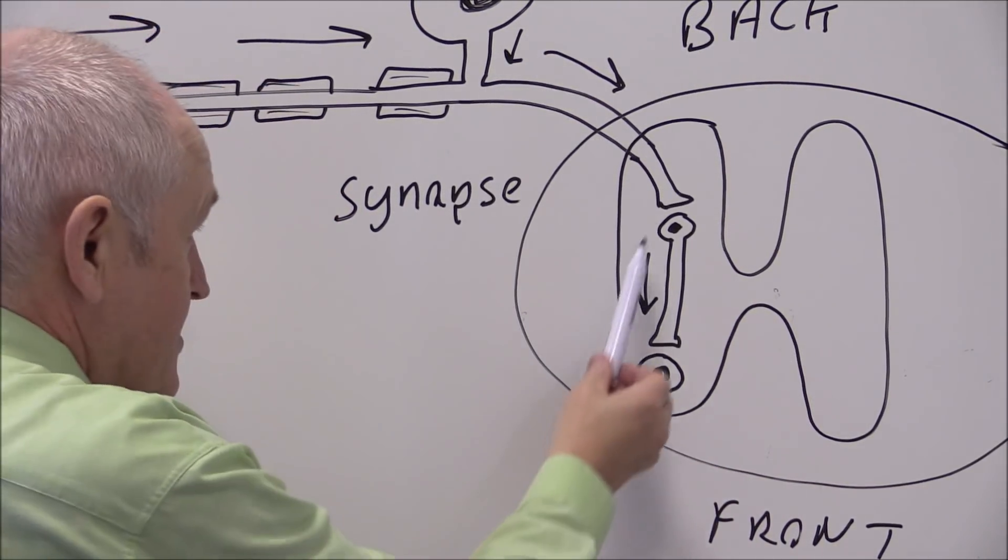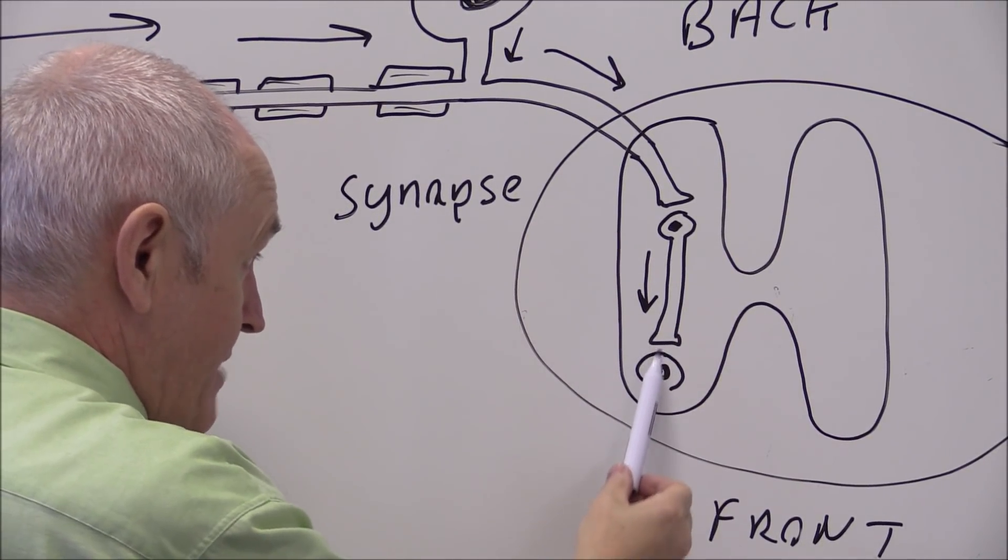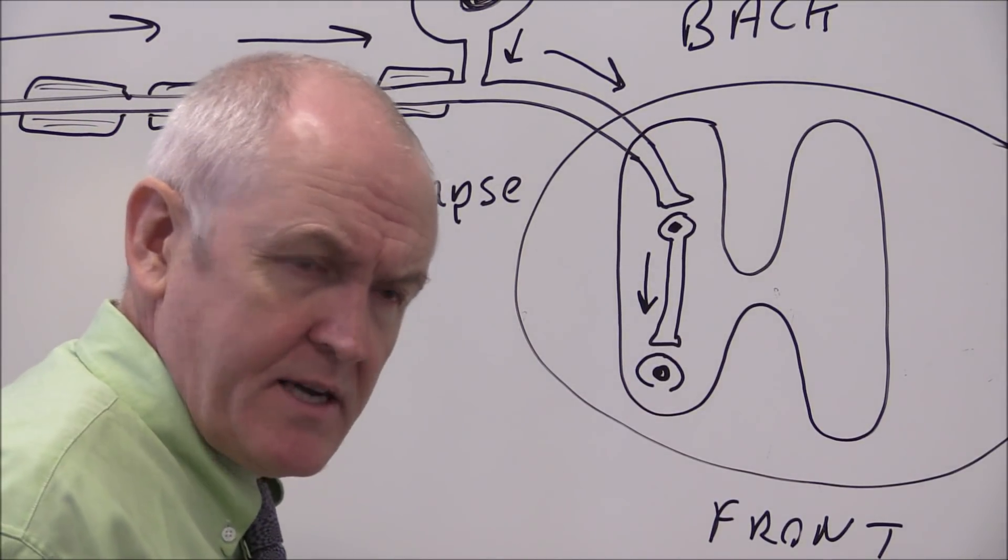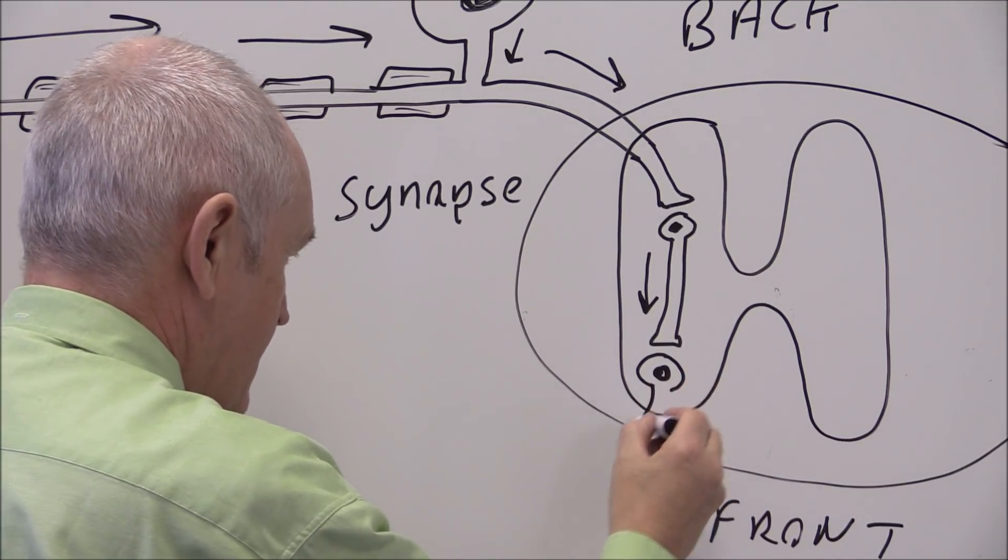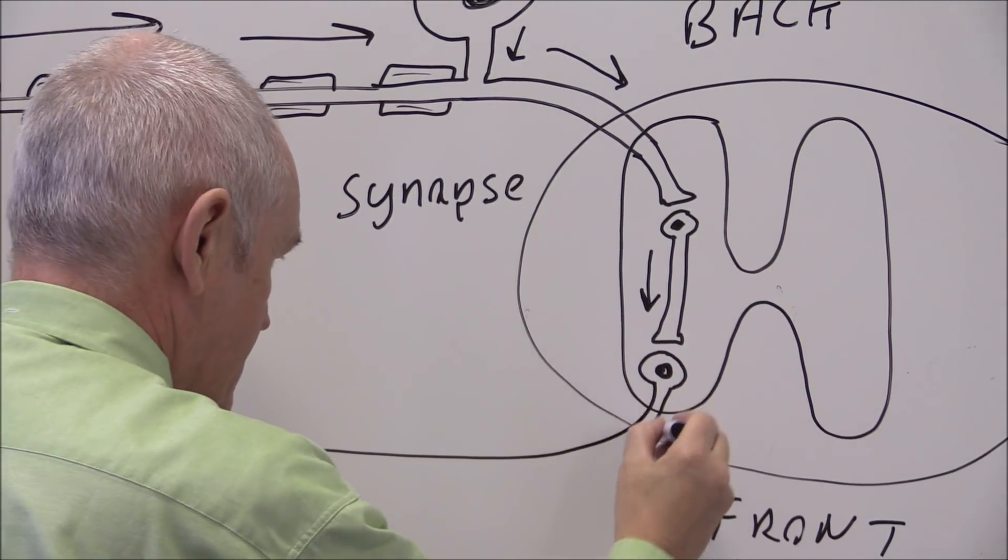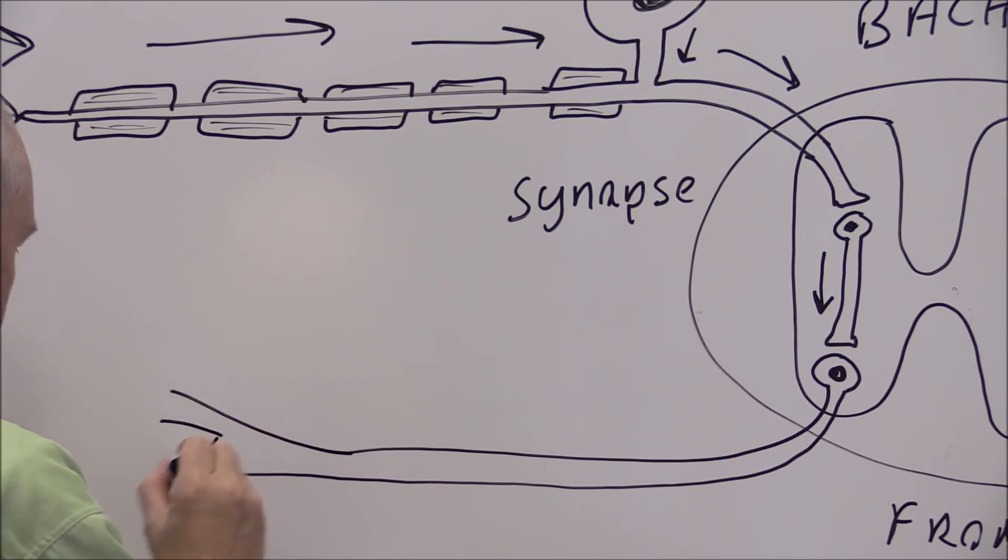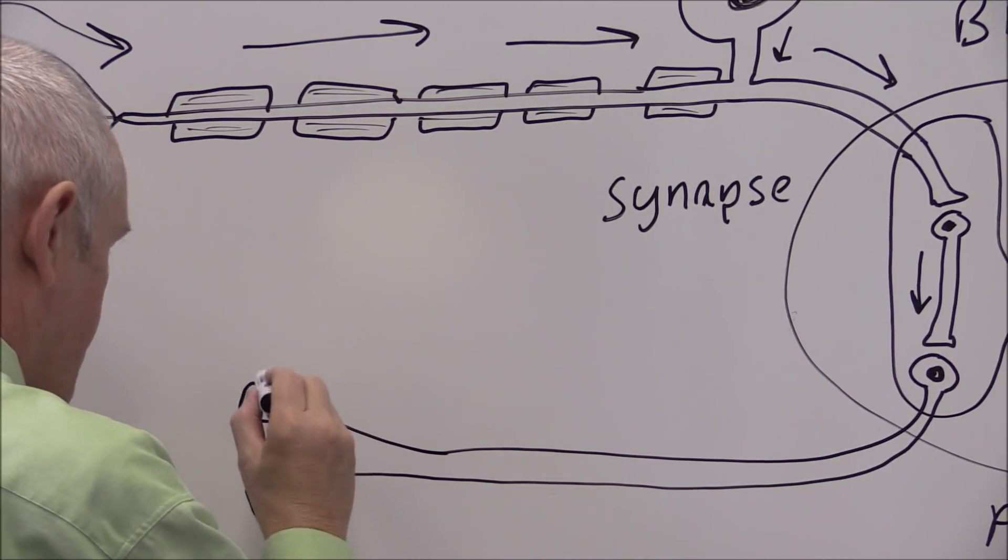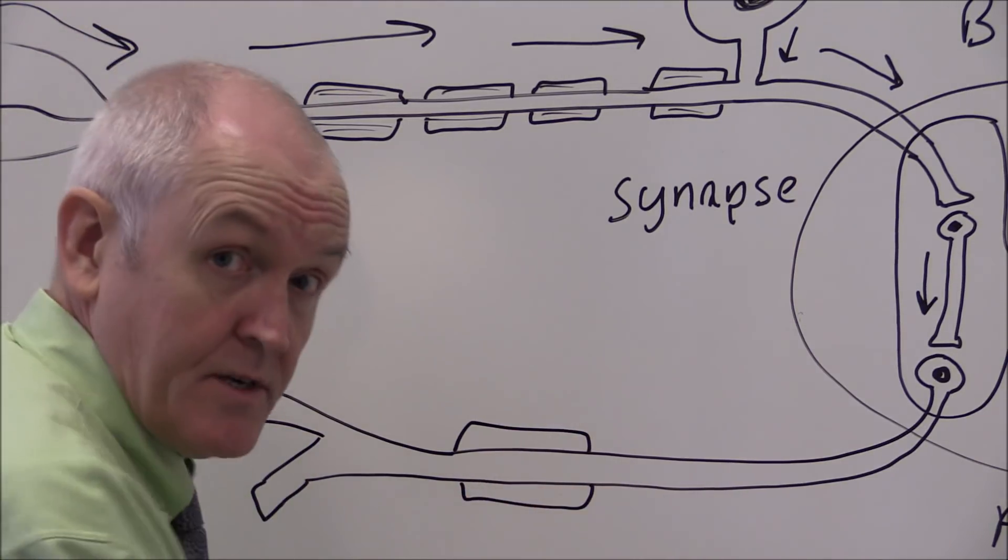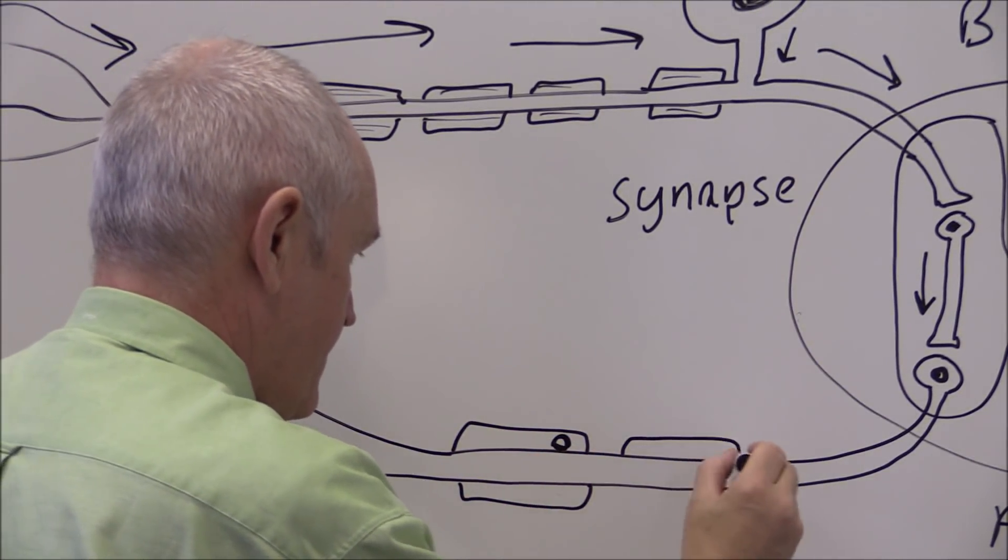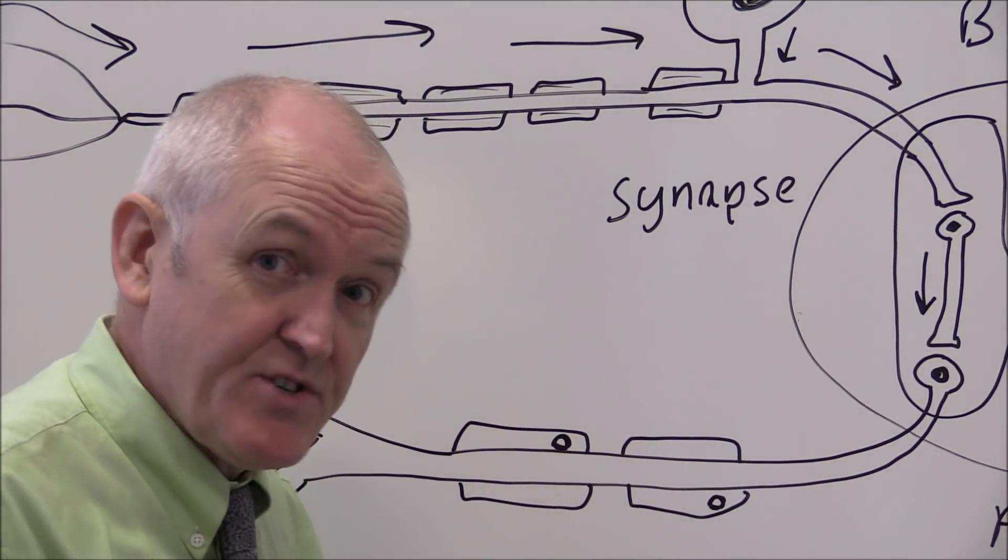So that synaptic gap is transmitted by chemical transmitter. That synaptic gap, the impulse is transmitted again by chemical transmitter. And then the axon of the motor neuron leaves the spinal cord and goes to the muscle. This of course is myelinated as well with the Schwann cells and the myelin sheath, facilitating the process of saltatory retransmission. So this is quick.